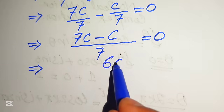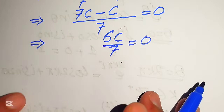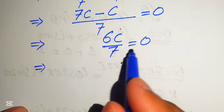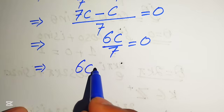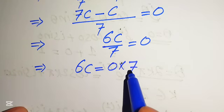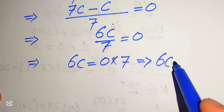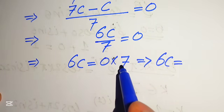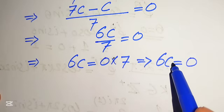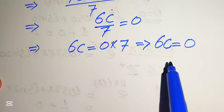Subtracting seven c minus c gives six c, so we have six c over seven equals zero. Moving the seven to the right hand side means it multiplies zero: zero multiplied by seven equals zero, because zero times any number is zero. So we get six c equals zero.